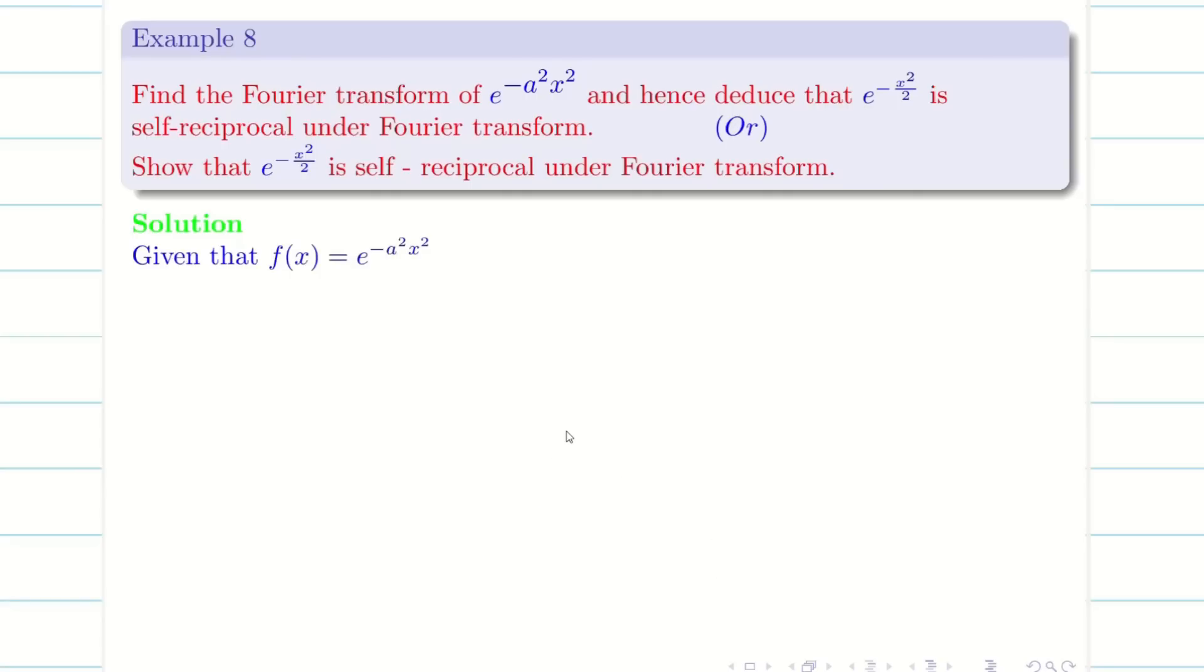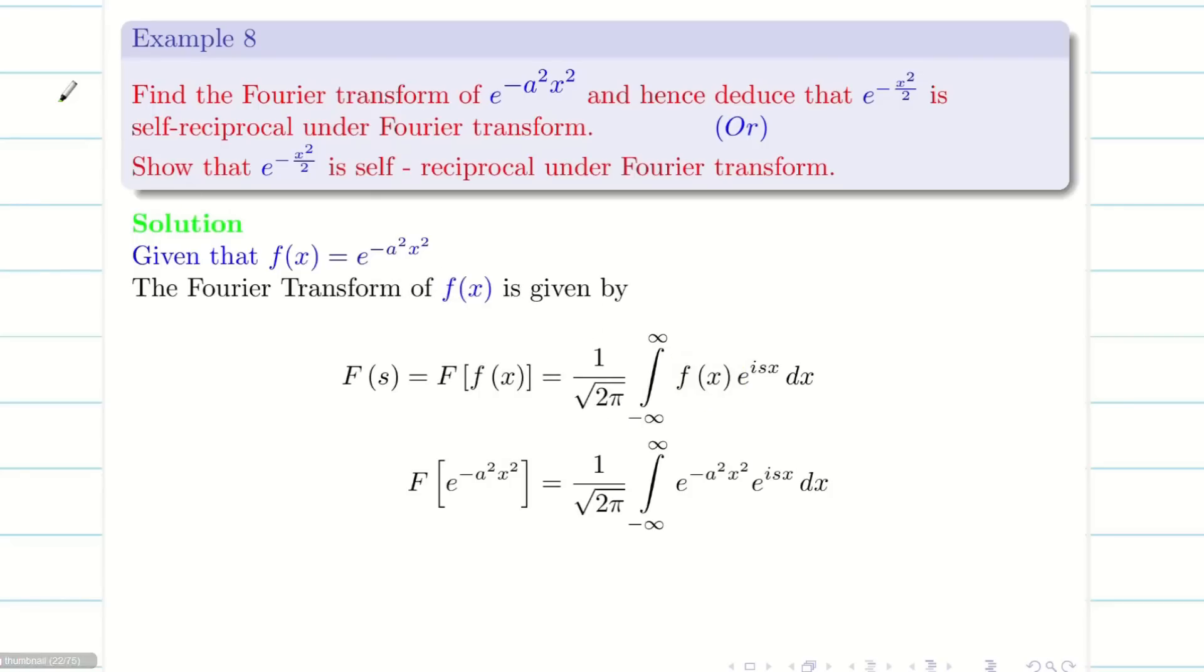Okay, so I will go this way. I am going to assume f(x) is e to the minus a squared x squared. If it is given, good. If the second question is given, you can say let f(x) equal e to the minus a squared x squared. Then as usual, step 1: Apply Fourier transform formula. My f(x) is e to the minus a squared x squared. I will apply this.